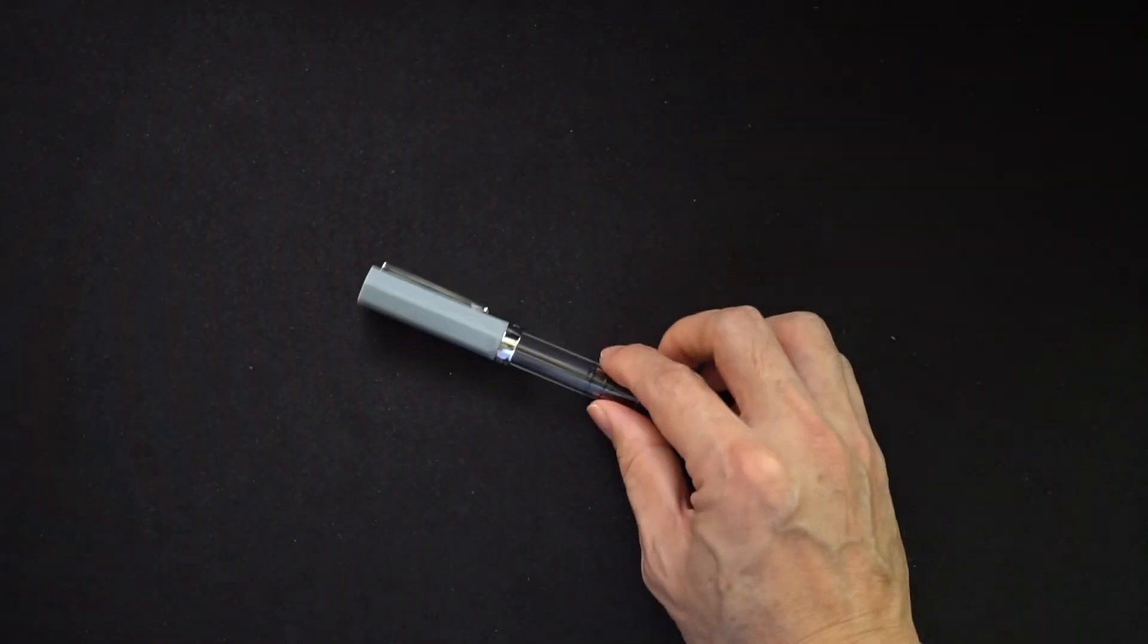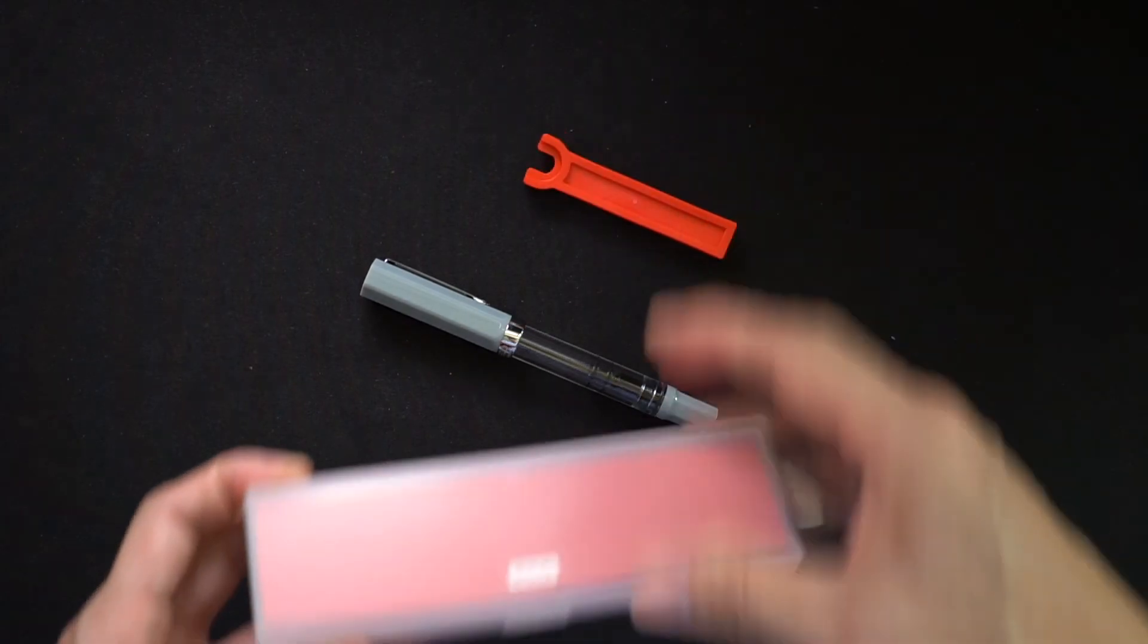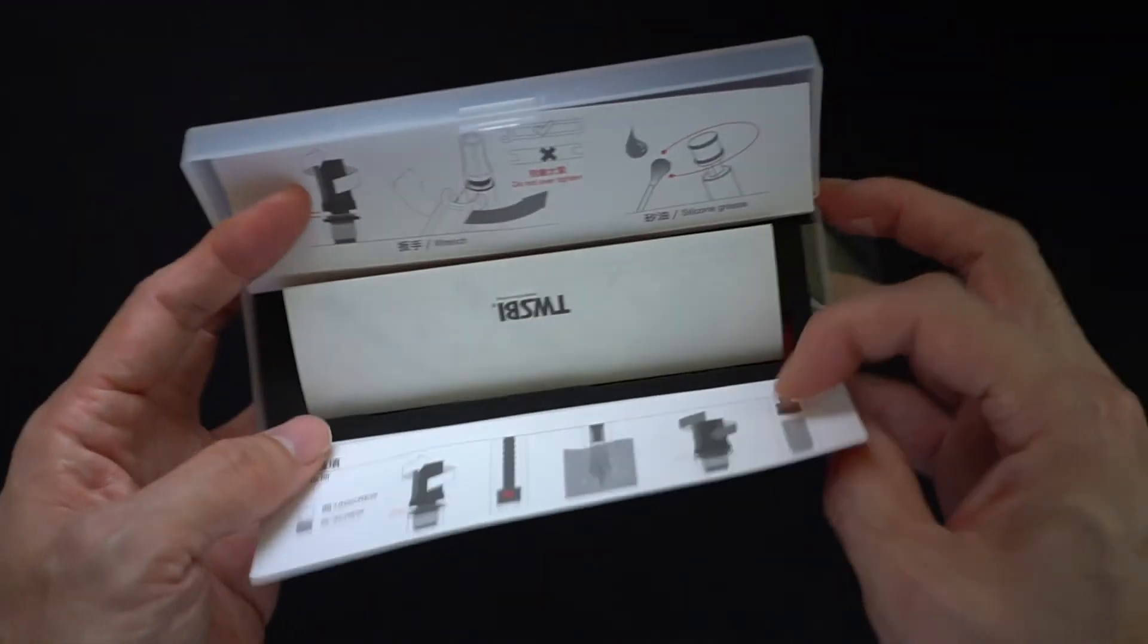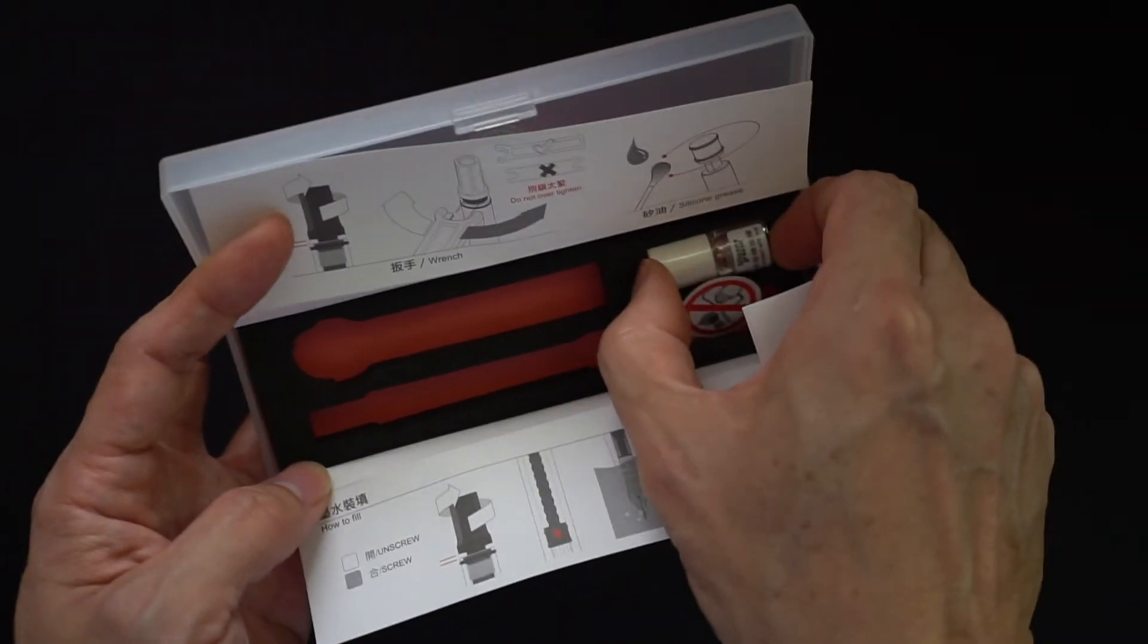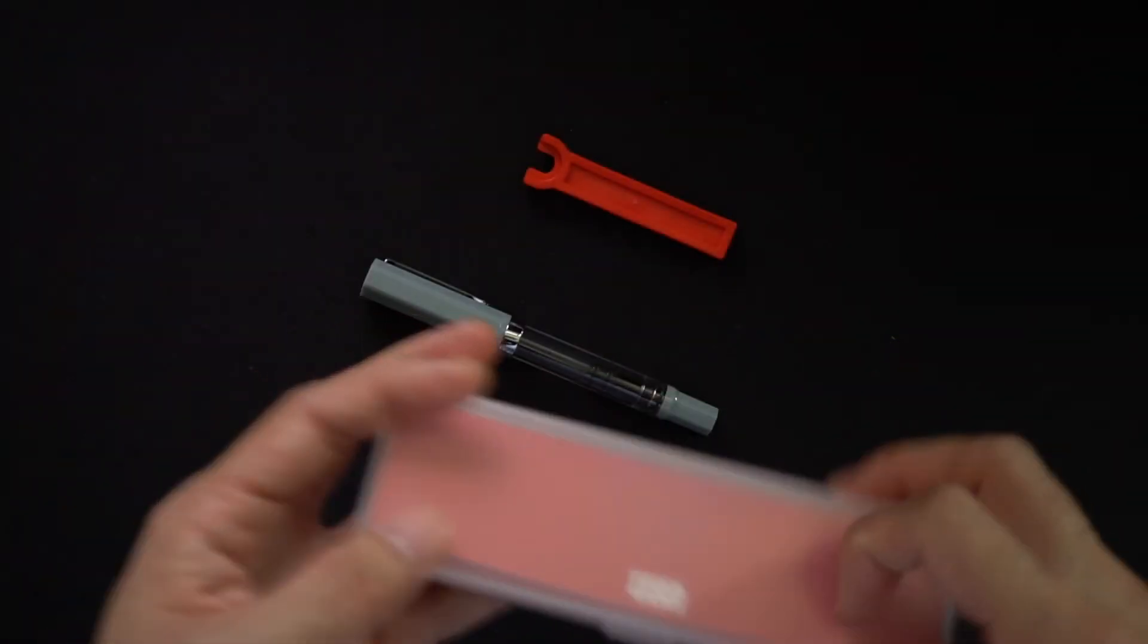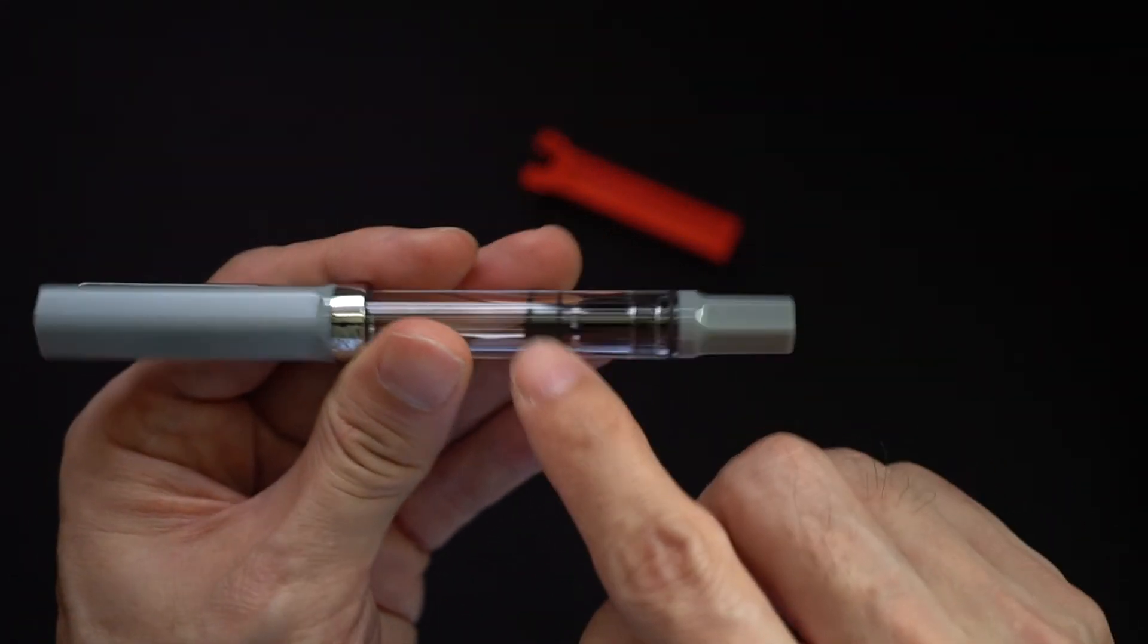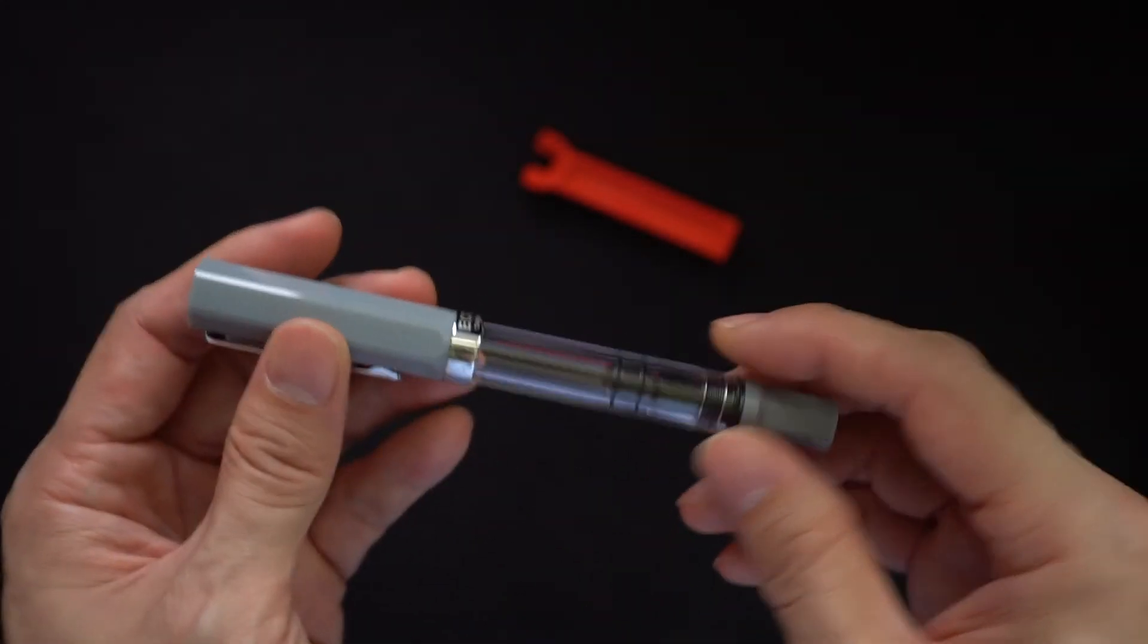So in terms of what the pen comes with, it comes with, like I mentioned, this little wrench, comes with nice box with usual instructions and all that. And it comes with this little bottle of silicone grease, which you'll use very occasionally to lubricate the little o-rings and seals down here if you need to.